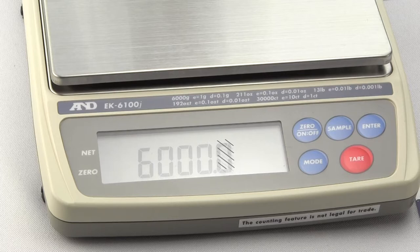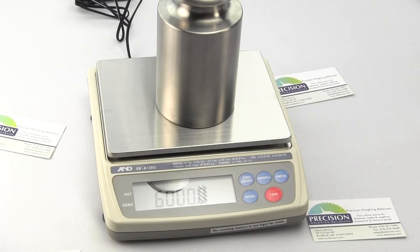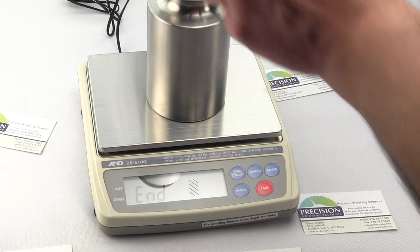So I have 4 kilograms, 2 kilograms. You place it on the weighing platform. Then you hit the ENTER key. You'll notice in the upper left-hand corner, there's a circle that says it stored the value. Then it states END.